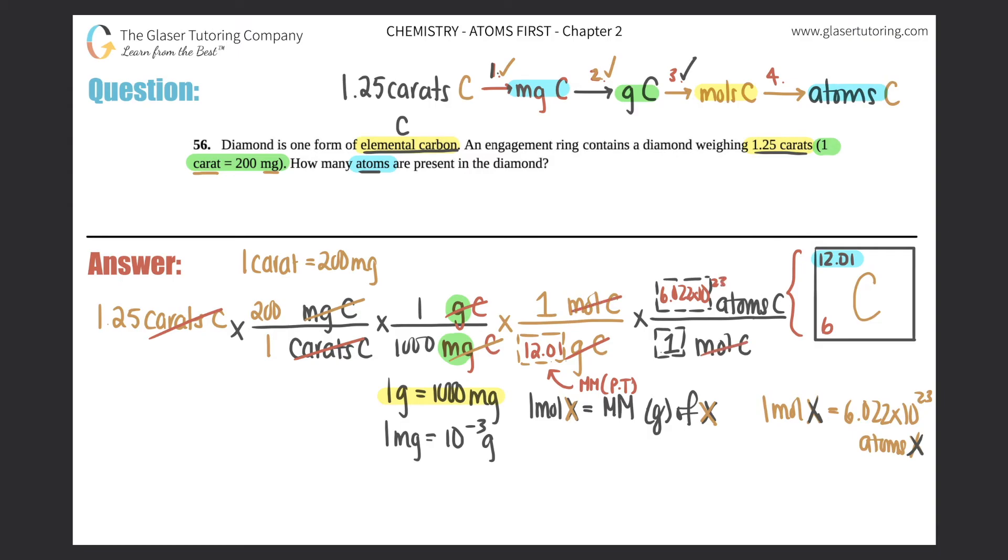And the only unit that you're left with is atoms of carbon because everything else canceled. So to simplify this, you could do this all in one shot or you can multiply the top, multiply the bottom, and then get the answer. It doesn't matter. I'll just do the top and the bottom. So what I'll do is 1.25 times 200 times 6.022 times 10 to the 23rd. You get 1.5055 times 10 to the 26th, all over a thousand times 12.01.